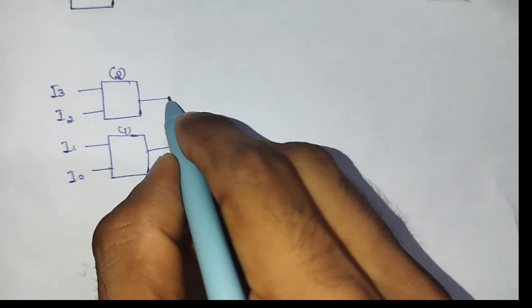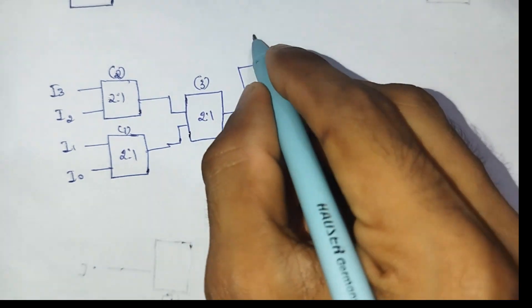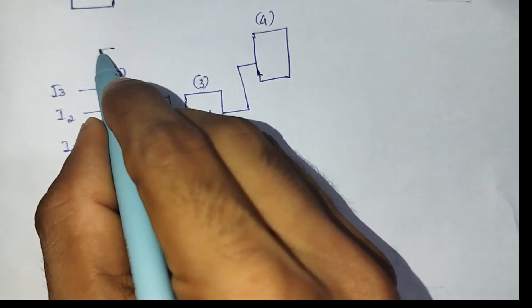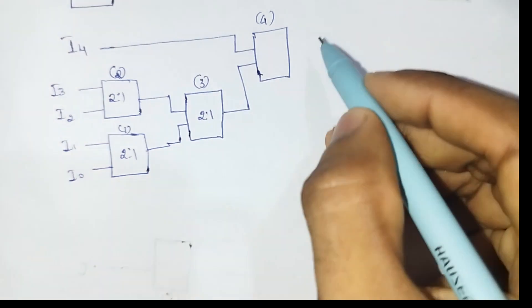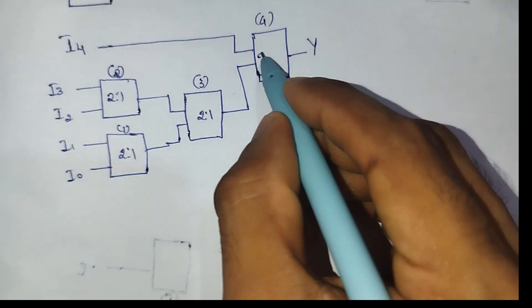The outputs of the first and second muxes are connected to a third mux. The output of the third mux is then connected to a fourth mux. For this fourth mux, we also connect another input i4. This gives us the final output.